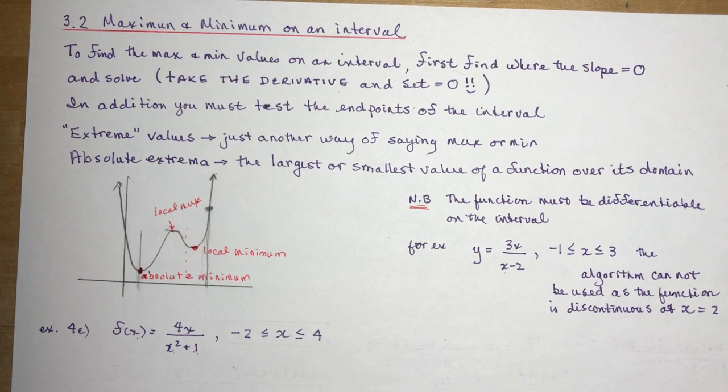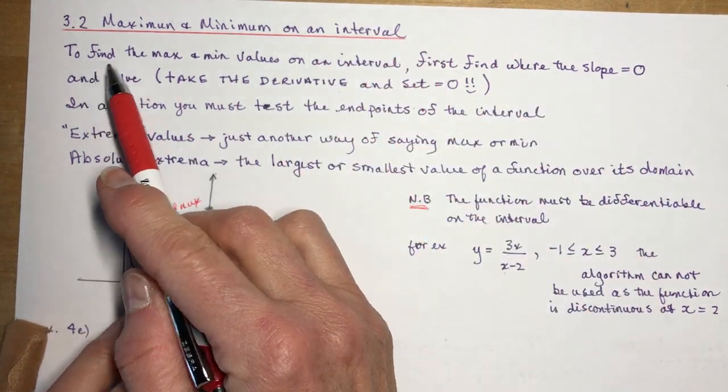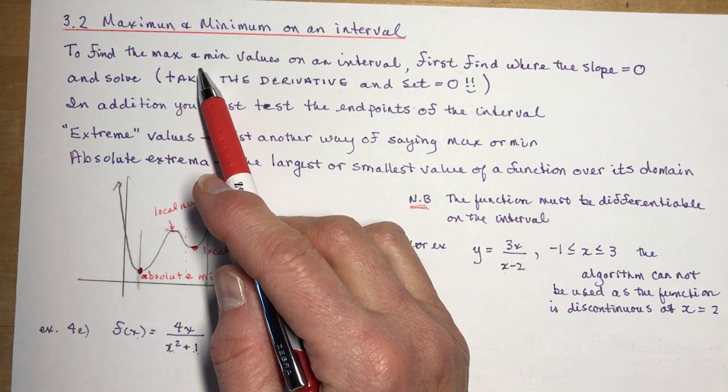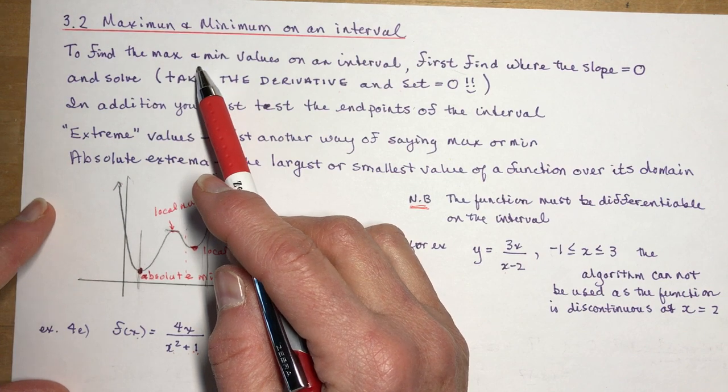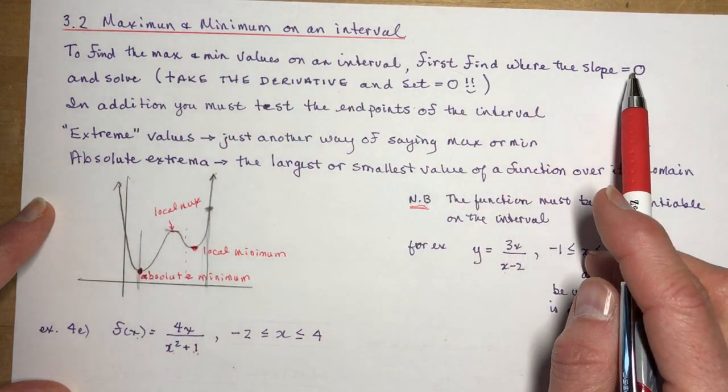So how do we find a maximum on an interval? You have to remember the keyword here is on an interval. To find the maximum, this is what we call the algorithm, which is the rule that you're going to use in order to find out where this maximum values occur. So to find it, you find where the slope is zero and solve.